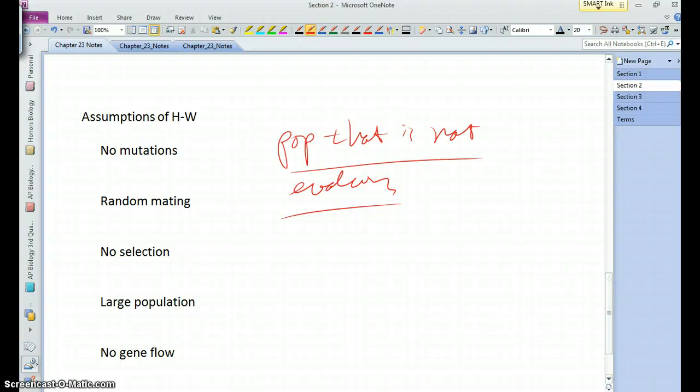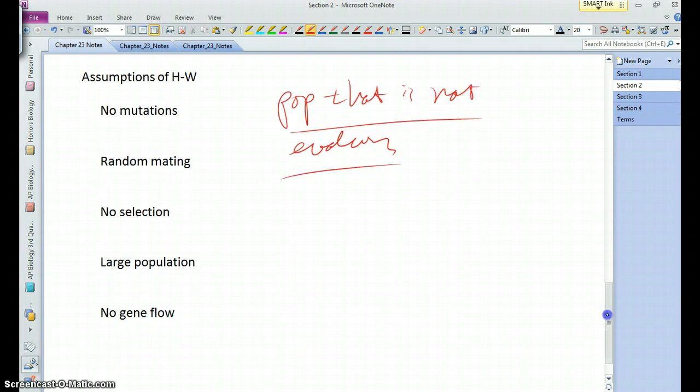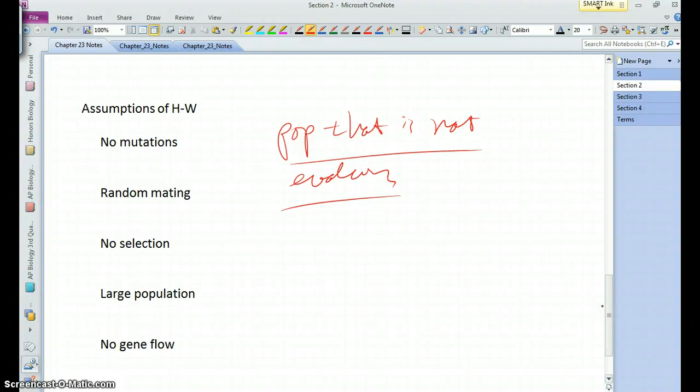But what Hardy-Weinberg does for us is allows us to, again, look at a population, look at particular genetic loci, and determine sort of on whole, is that population changing much? Is it evolving much? Are there particular genetic loci that are perhaps evolving at a more rapid rate than others?